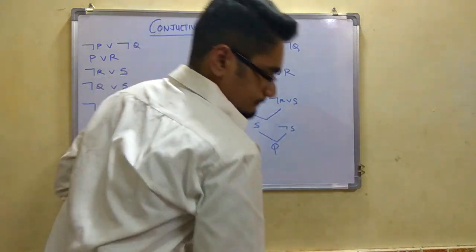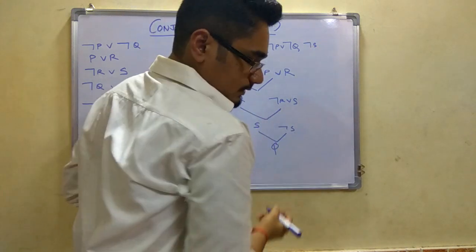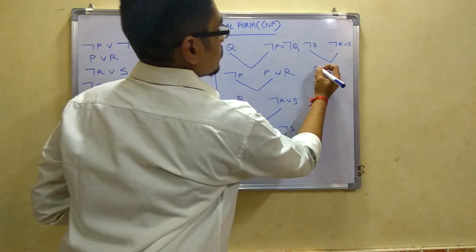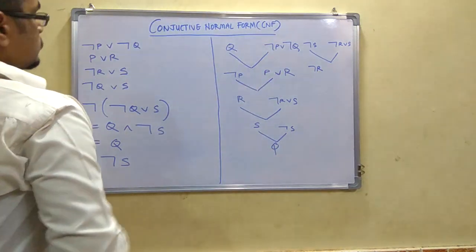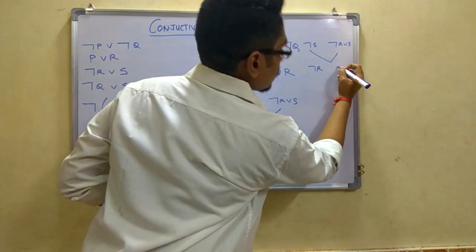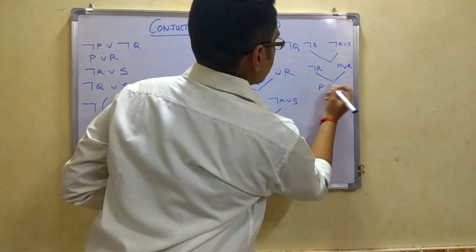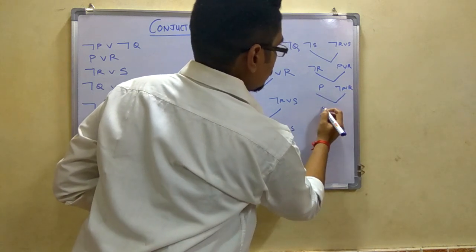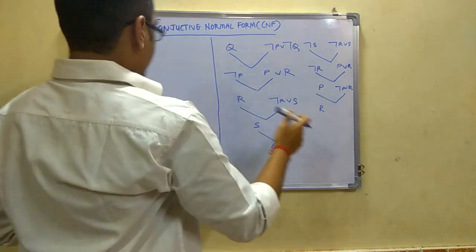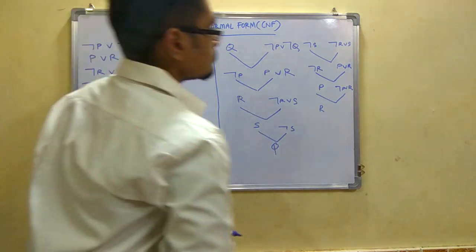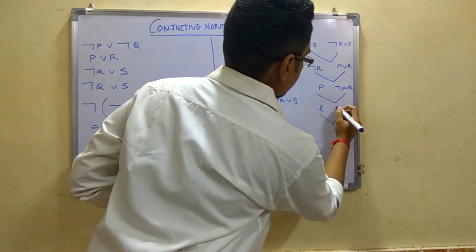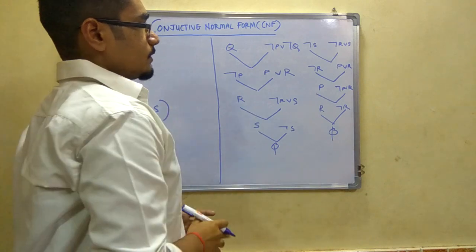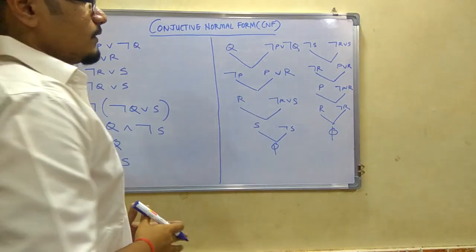For ¬S: we resolve ¬S with ¬R ∨ S, leaving ¬R. We then resolve ¬R with P ∨ R, leaving P. Finally, we resolve P with ¬P ∨ ¬Q — but we also use the chain: we got R, then resolve ¬R giving the null set. Both resolution chains — for Q and for S — ultimately yield the empty (null) set.